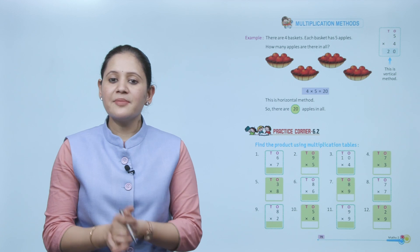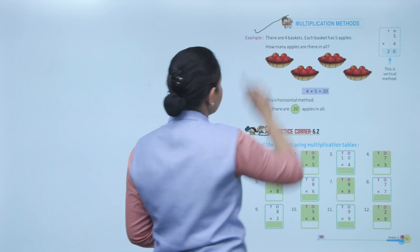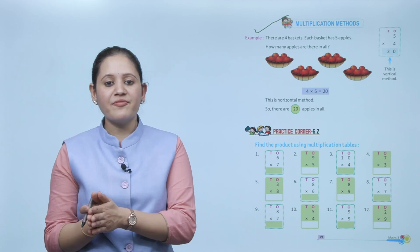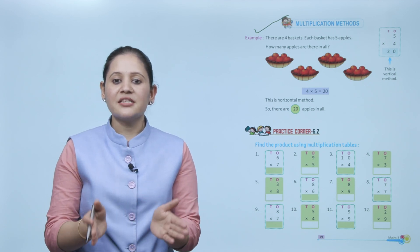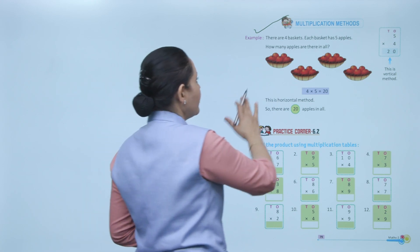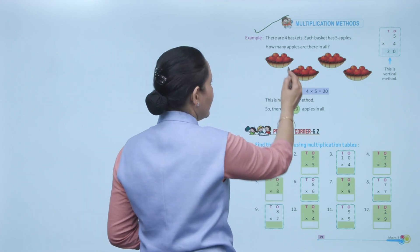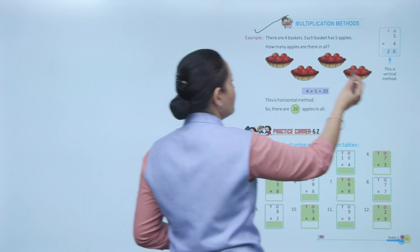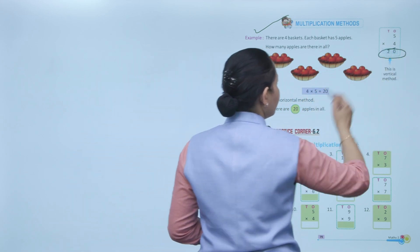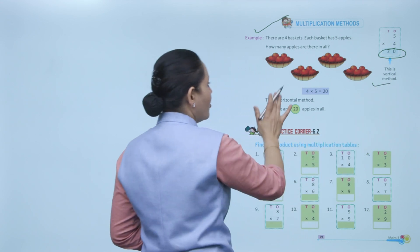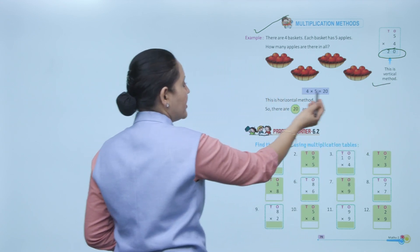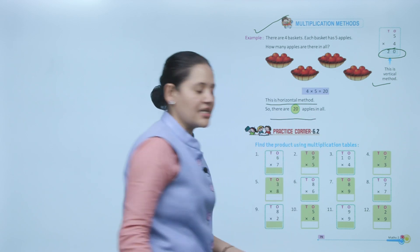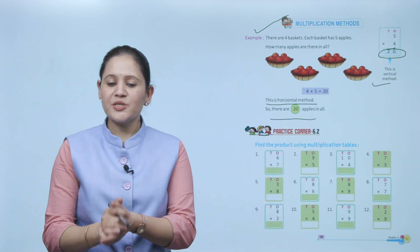Next: multiplication method. There are 4 baskets and each basket has 5 apples. How many apples are there in all? Total baskets: 4, each with 5 apples, so 5 into 4 equals 20. This is the vertical method. Or we can write 4 into 5 equals 20 — that is the horizontal method. There are 20 apples in all.